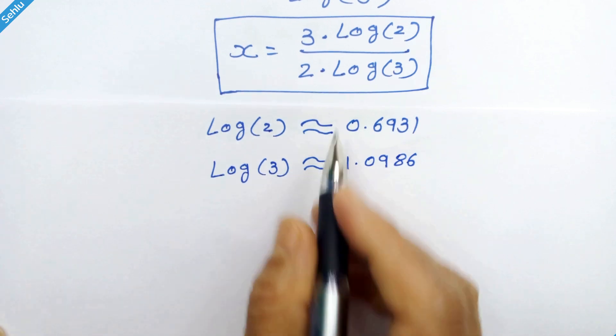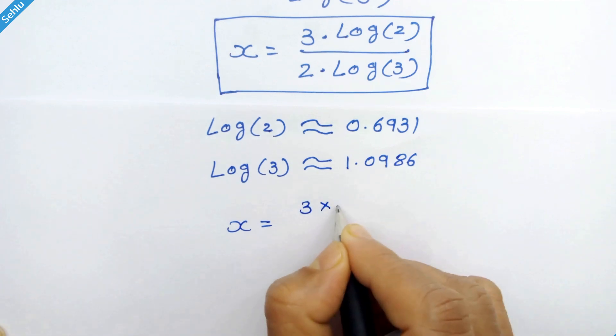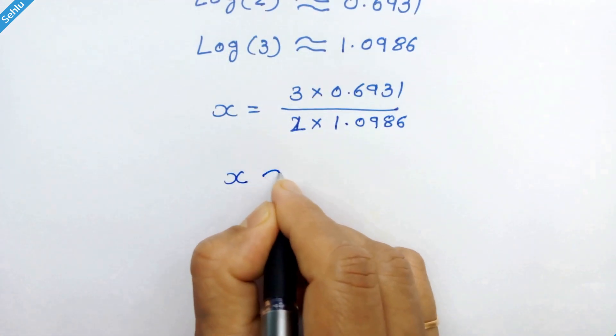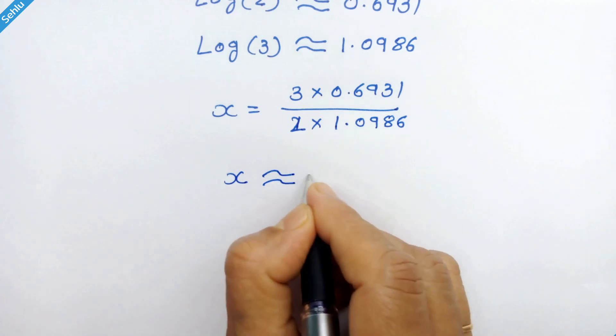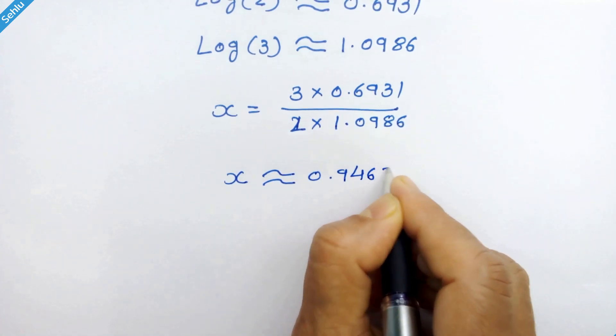So if we put this in the answer, x is approximately equal to 0.9463.